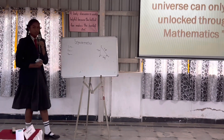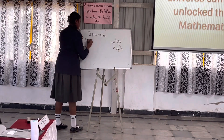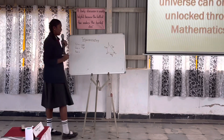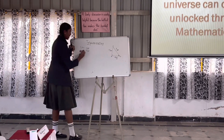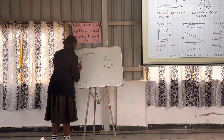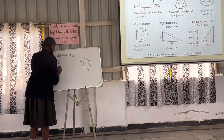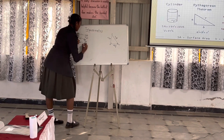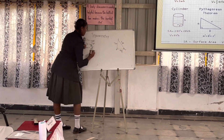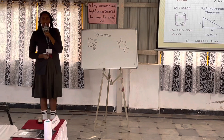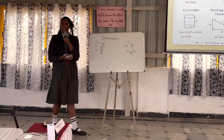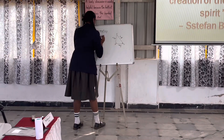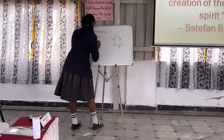The sine ratio is opposite divided by hypotenuse. Cosine is adjacent divided by hypotenuse. Tangent is opposite divided by adjacent. The other three ratios are just the reciprocals of these.